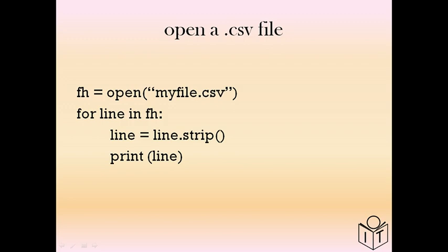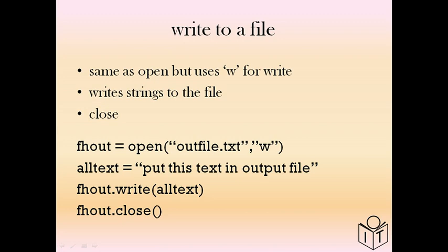When writing data out to a file — rather than getting text from a file, we're putting text into a file — we can write to a file. Here we use similar syntax, similar Python, but when we open we use the letter w for write. So now Python knows we want to write the text from our program out to a file. We open the file, then we write the text, and then we close the file.